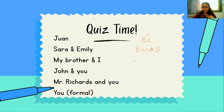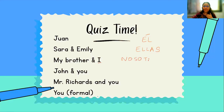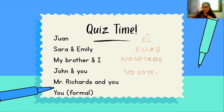Now let's look at Sarah and Emily — two girls. 'Sarah and Emily go to movies every Saturday' — they go to the movie. Since these are girls, the replacement in Spanish is 'ellas.' Next: 'my brother and I.' My brother is 'he,' but together we are 'we.' He and I becomes 'we.' My brother is a boy and I am a girl — it's a mixed group, so we stick with the masculine: 'nosotros.'